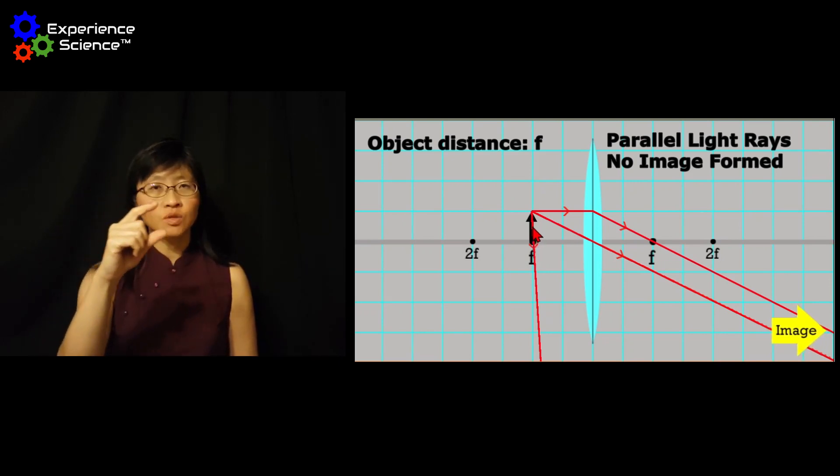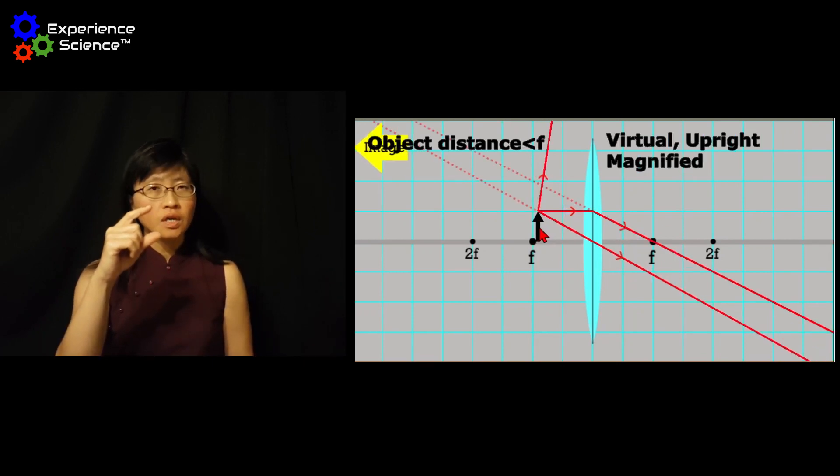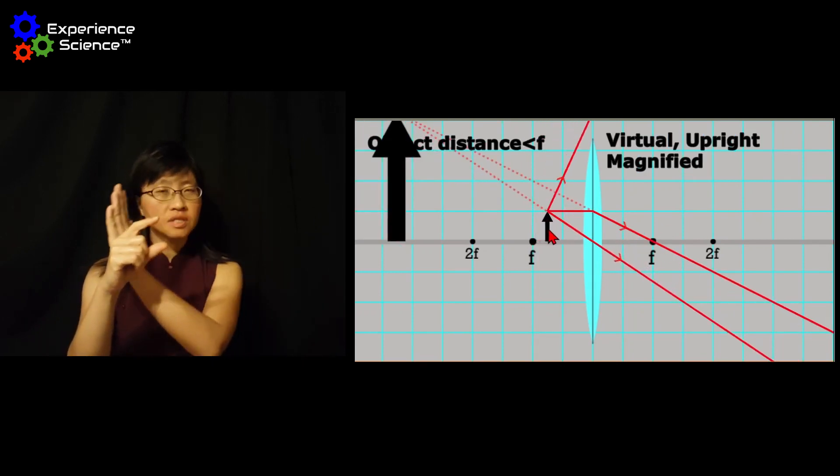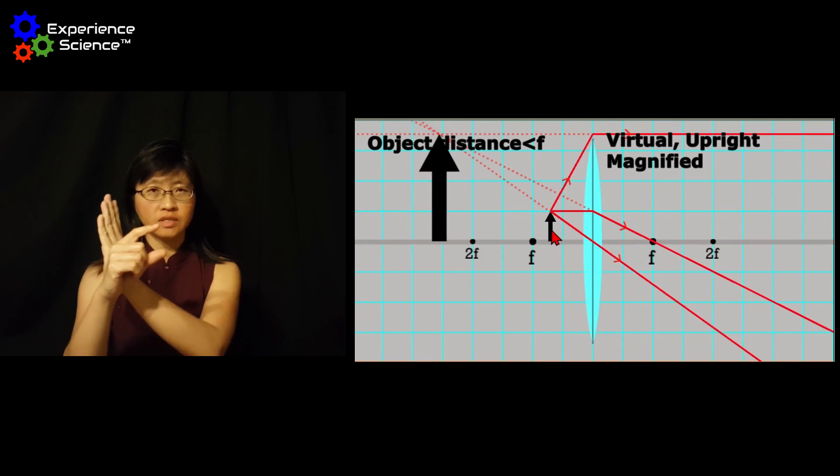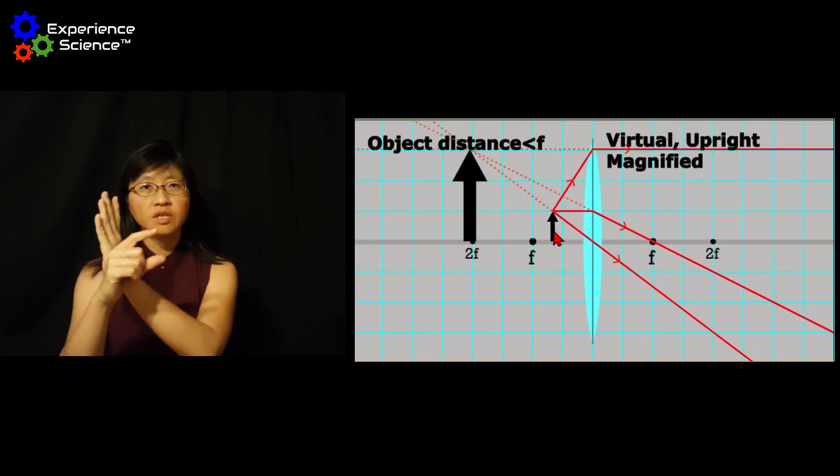When the object is shifted between F and the lens, the image formed will be on the same side of the object, and this image will be upright,